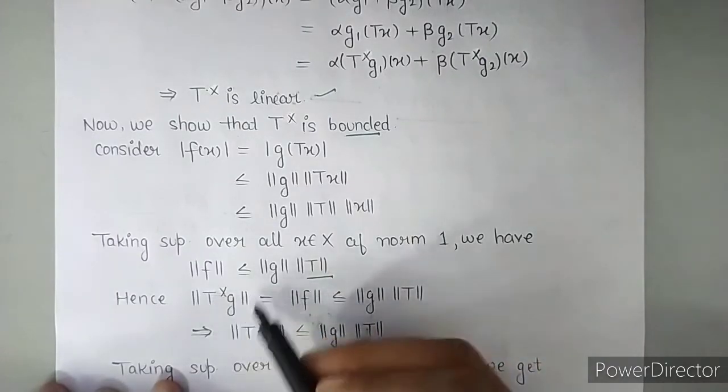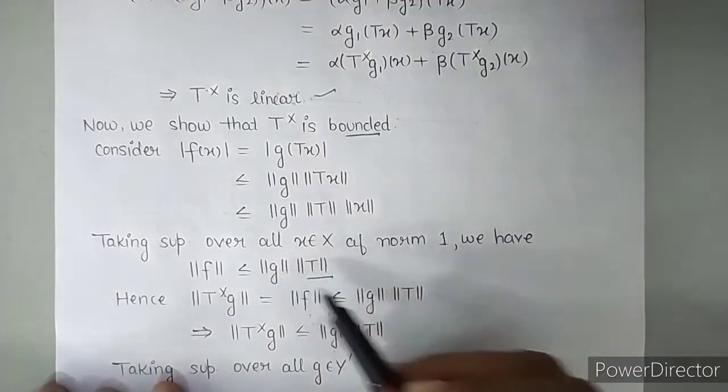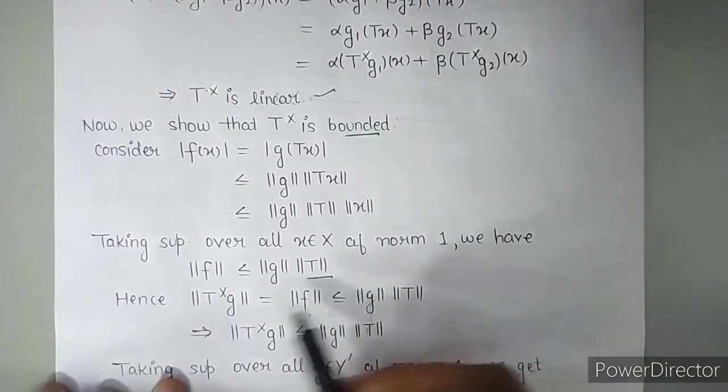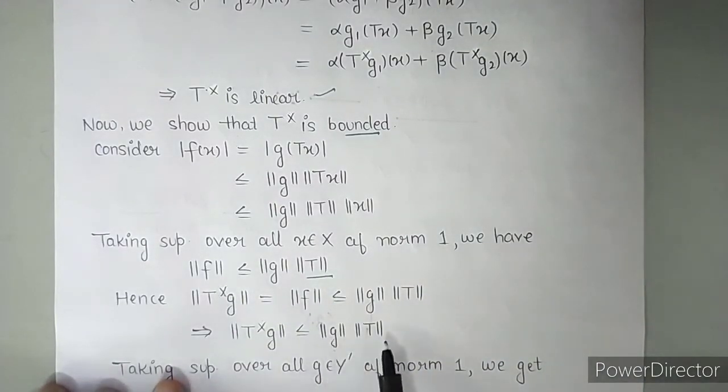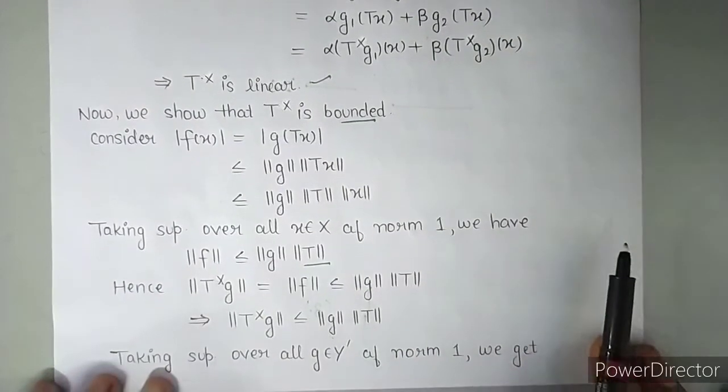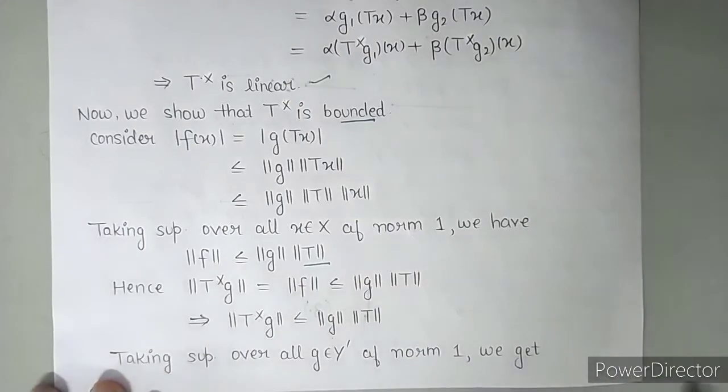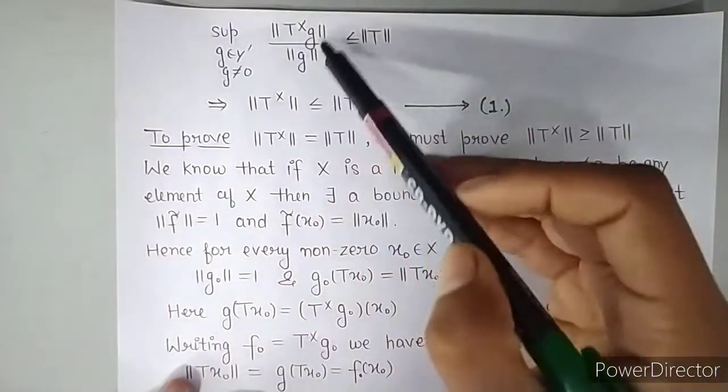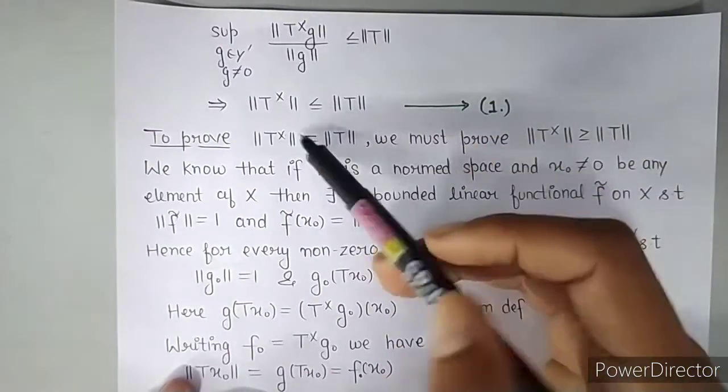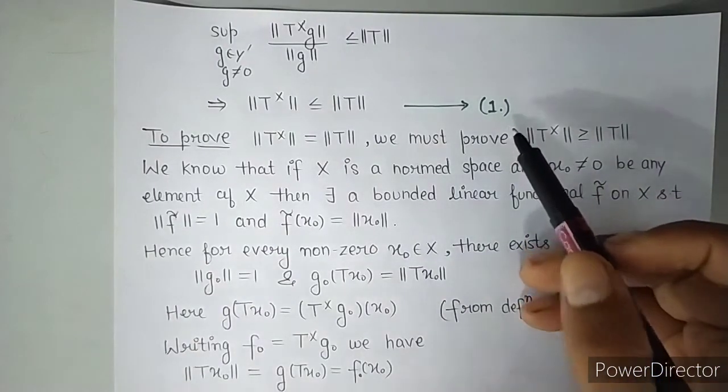So hence norm of T star G, since F is equal to T star G, so norm of T star G equals norm of F. And norm of F is less than or equals to norm of G into norm of T. So this implies that norm of T star G is less than or equals to norm of G into norm of T. So now taking supremum over all G belonging to dual space of Y with norm 1 we get. So now let's see what we get. So we took supremum. So this term becomes norm of T star and this term becomes norm of T. So as it is. And let's say this be equation number 1.